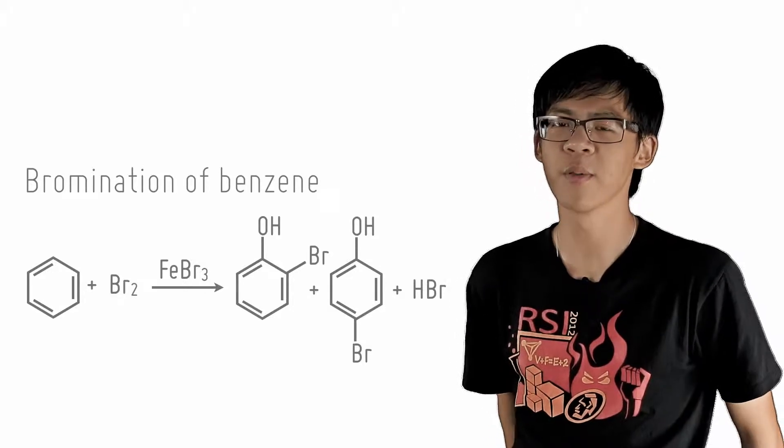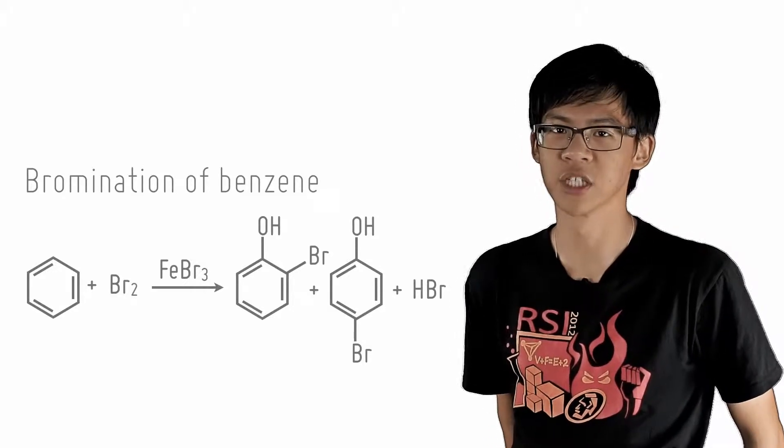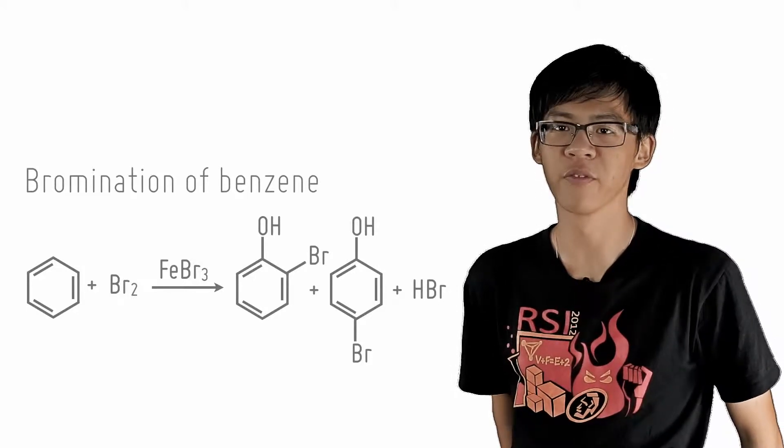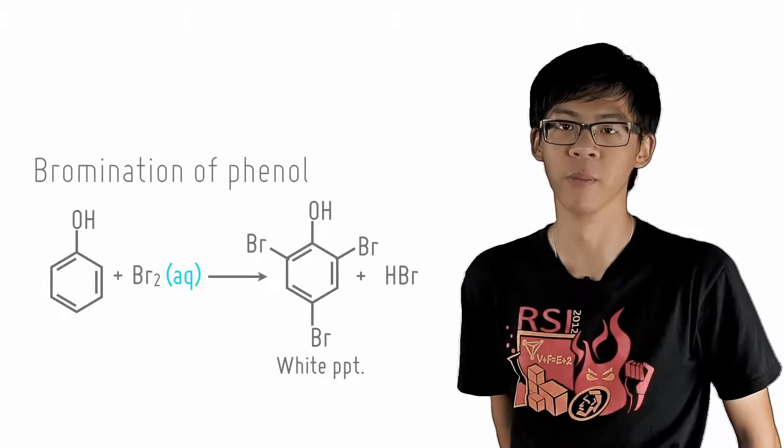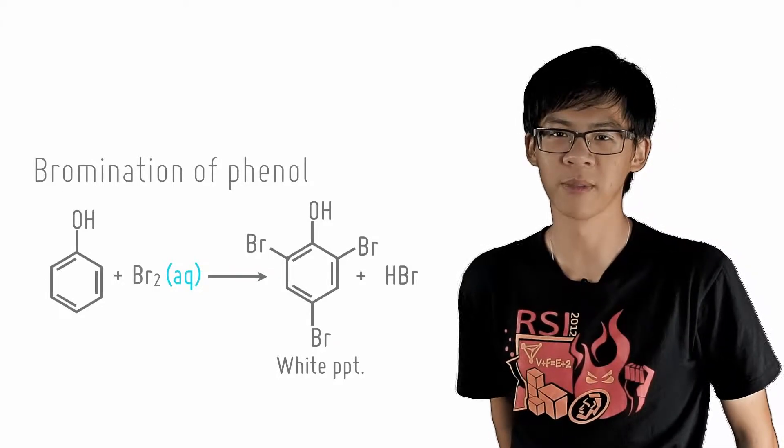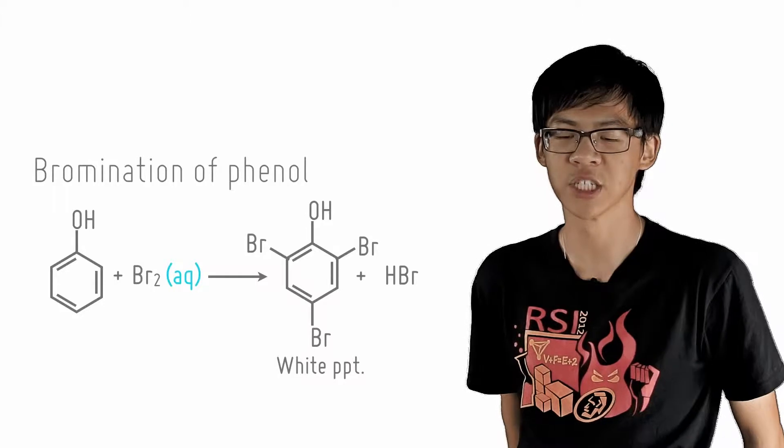We can guess that the variable electrophilic substitution of phenols means that bromination will be much easier. Indeed, bromination of phenols will not require the catalyst at all. Simply adding aqueous bromine at room temperature to phenols forms the tri-substituted product with HBr as a by-product.